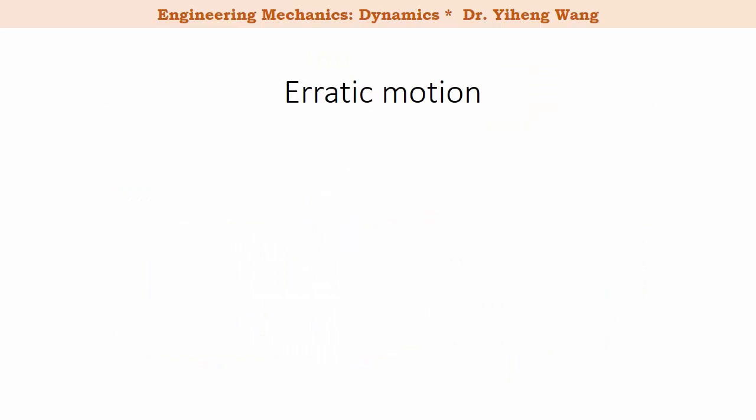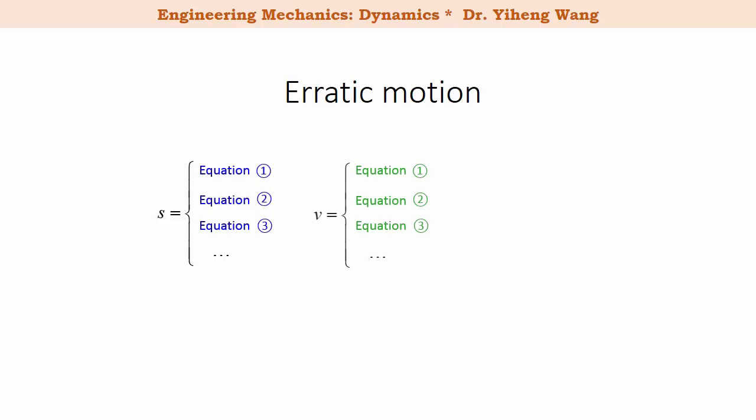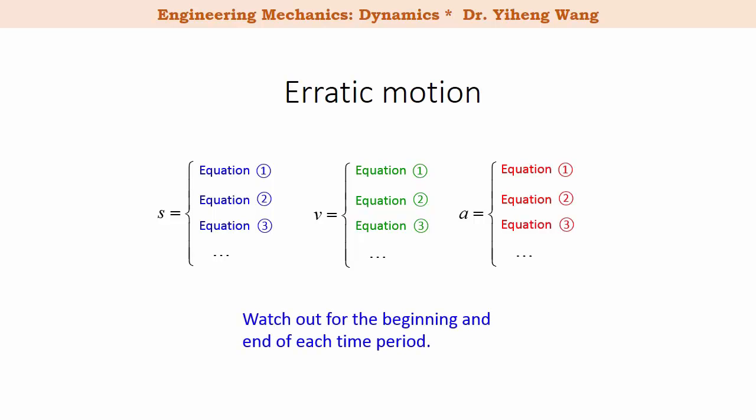Now for erratic motion. It simply means that the position-time dependence cannot be fully characterized by just one equation, but needs more than one equation applying to different time periods. In math, a function like this is called a piecewise function, and the velocity and acceleration functions may be piecewise functions as well. Keep in mind that all three basic kinematic equations still apply for erratic motion; however, when sketching graphs you must be careful about where each time period begins and ends.